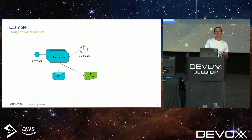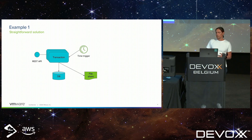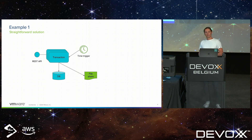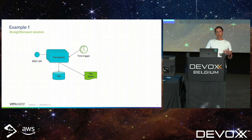A straightforward solution is to put all the logic of the transaction domain into one microservice, and this is a working solution of course. But there are some downsides. In a real-world scenario, we will have multiple instances of this microservice running simultaneously, because we want to support a high number of concurrent users and we want our online services to be highly available. But the data feed process should be executed only on one instance at a time. With this solution, we are forced to implement a master election solution, which is not rocket science, but it's a decent piece of software that we have to implement and maintain.